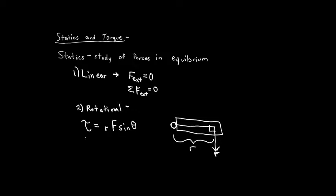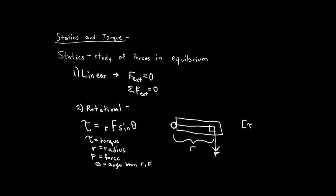So that's basically what torque is. Tau is the torque. R is the radius — that's the distance from your pivot point to wherever you're applying the force. F is the force that you apply to cause the rotation. And theta is the angle between your radius R and the force that you actually apply. The units of torque are the units of R times the units of F times the units of sine of theta. The units of R are meters, the units of force are newtons, and sine of theta is unitless. So the units of torque are newton-meters.